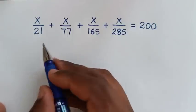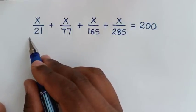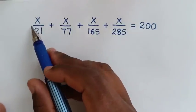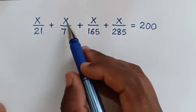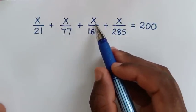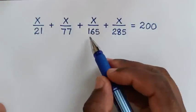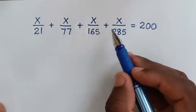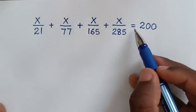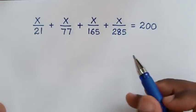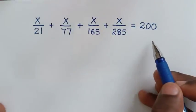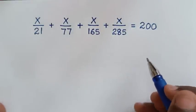Welcome. Solve this math problem: x over 21 plus x over 77 plus x over 165 plus x over 285 is equal to 200. Find the value of x from this equation.